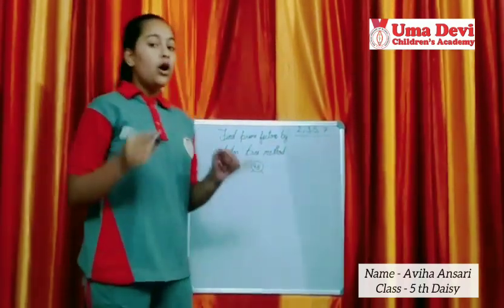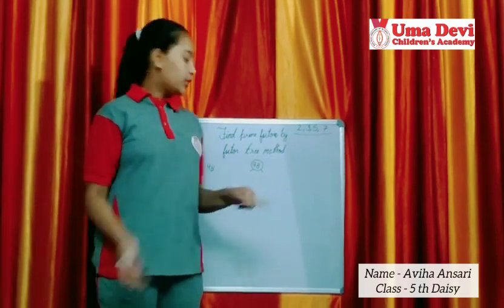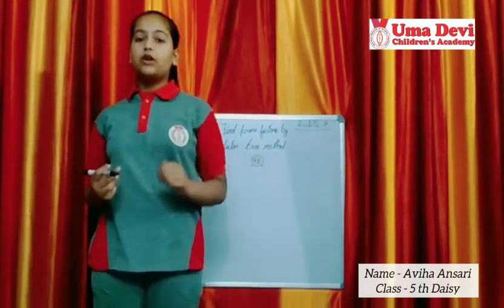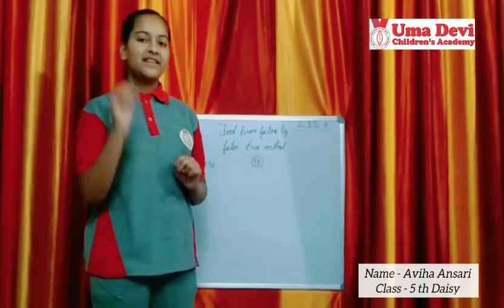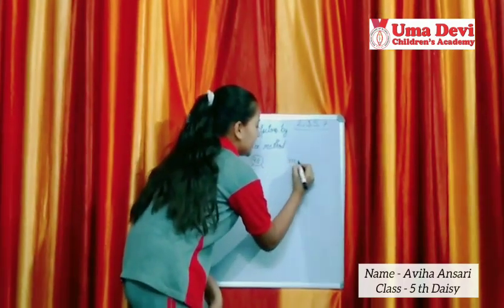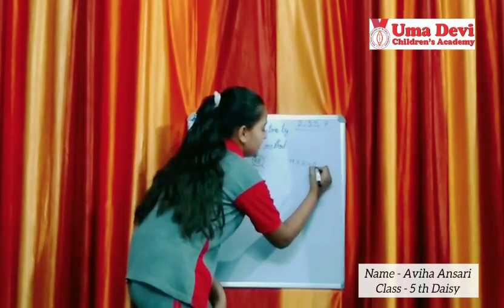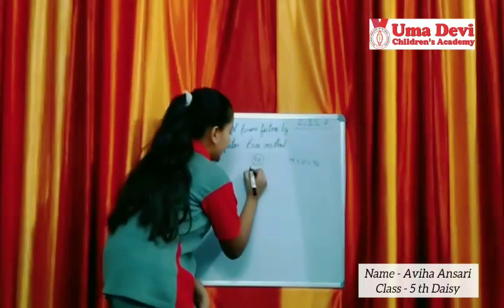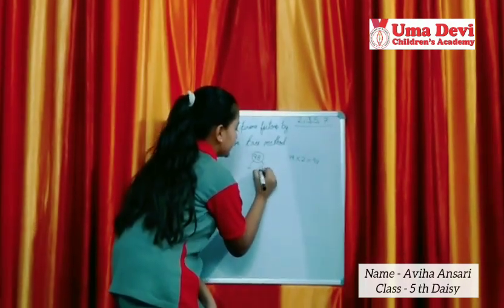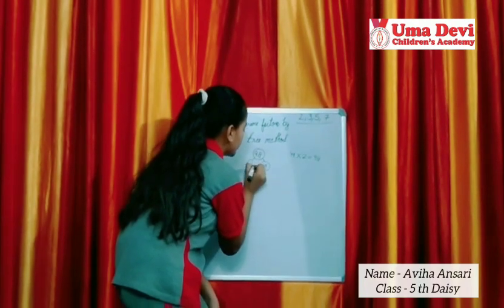Then we think which two numbers multiply to get 98, or the two factors of 98. Yes — 49 multiplied by 2 is 98. So we will write 2 here and 49 here, and make a circle around both of them.